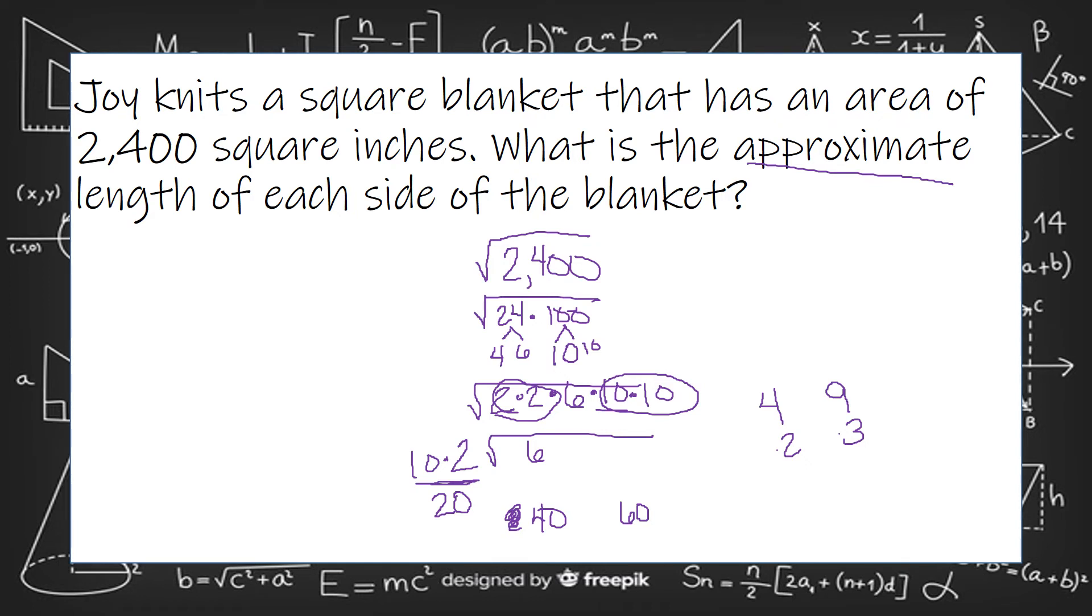Now, I could also say 2,400. Well, I know that 5 times 5 is 25. So 50 times 50 is 2,500. So on my calculator, just to make it a little quicker, I could do 49 times 49. And that would be 2,401. Boom. Guess what? That's pretty close.